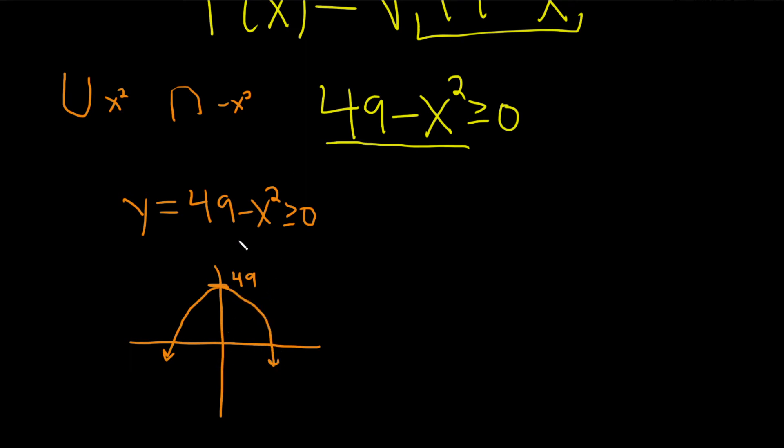You'll notice that if you plug in seven and negative seven here, you get zero. So those are actually the x-intercepts of this graph.